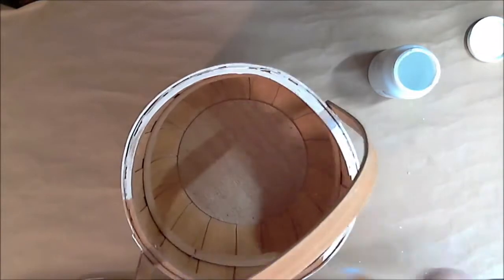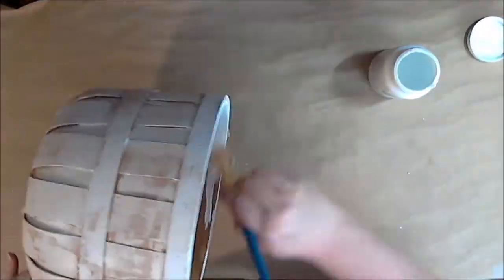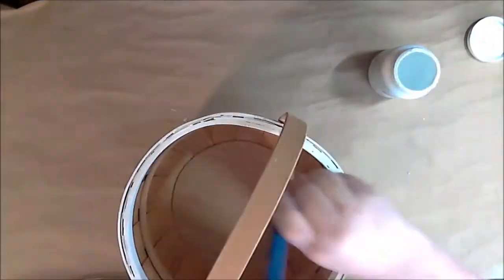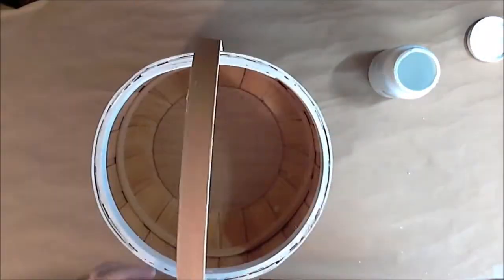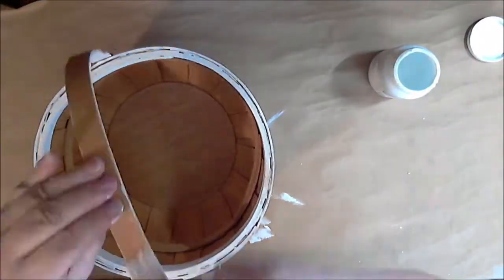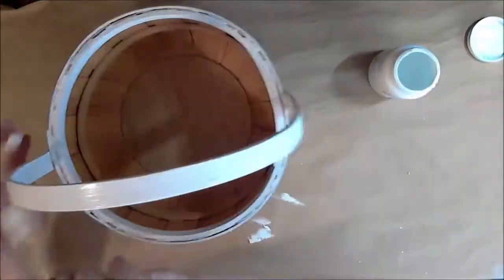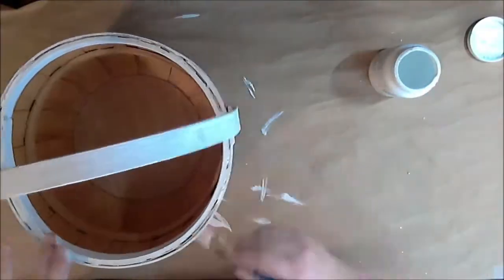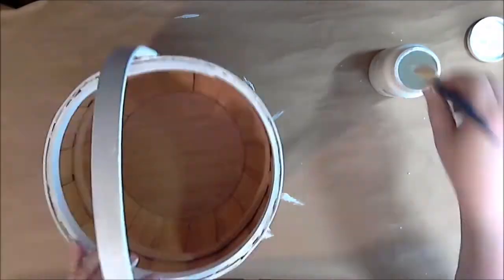So what I'm doing is using Waverly chalk paint that I got at Walmart in basic white, and I'm dry brushing it all over the entire basket. Then I'm giving the top edge and that top band and the handle a good solid coat, not just dry brushing, because those are the areas that are going to be handled the most and they need to be a little bit more protected.